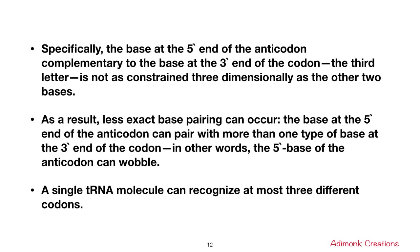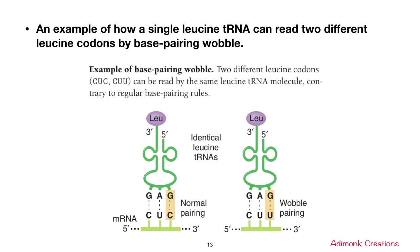Here is an example of base-pairing wobble: a single leucine tRNA can read two different leucine codons, CUC and CUU. The tRNA molecule has the anticodon GAG, and it can pair with either CUC or CUU because the first two nucleotides are similar. The first pairing is normal base pairing, and the second is wobble pairing.